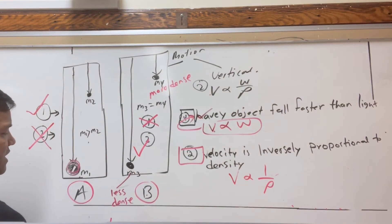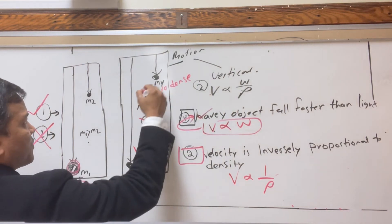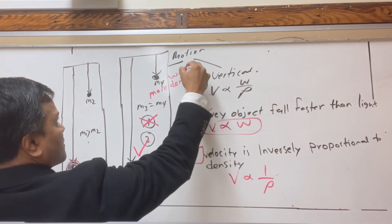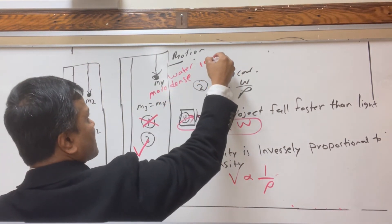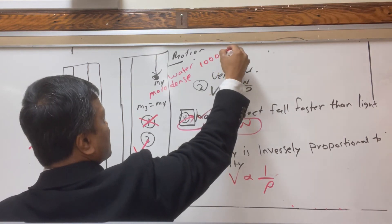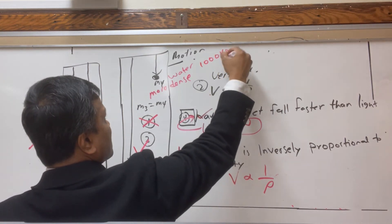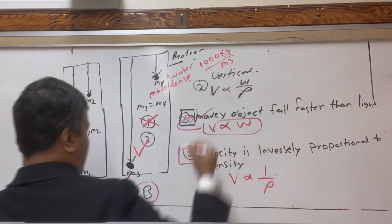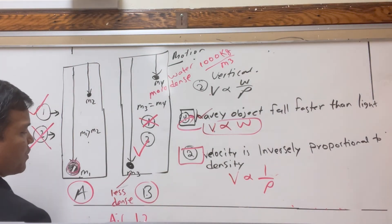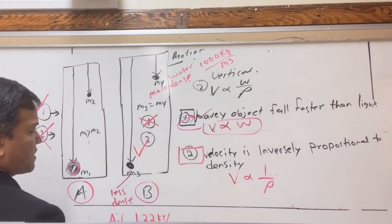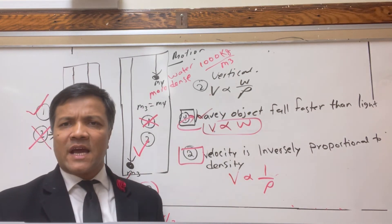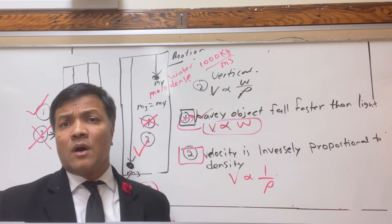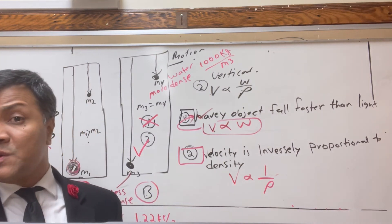For example, this could be air and this could be water. The water is 1,000 times more dense than air — air is only 1.2 kilograms per cubic meter. So Aristotle's ideas survived about 2,000 years.